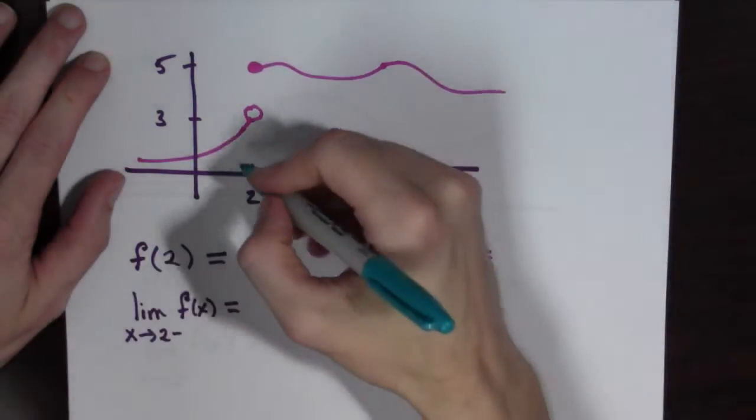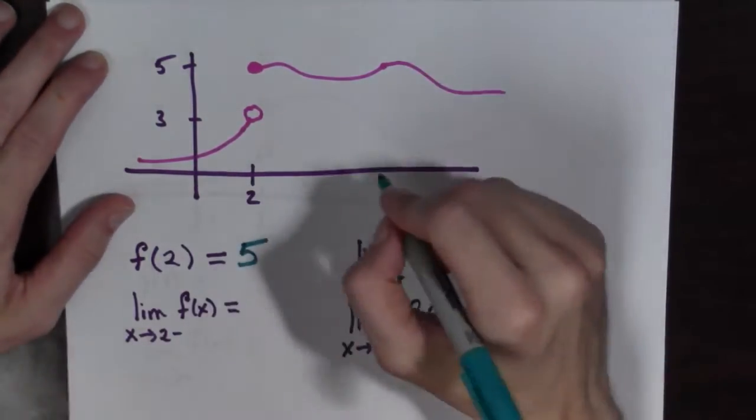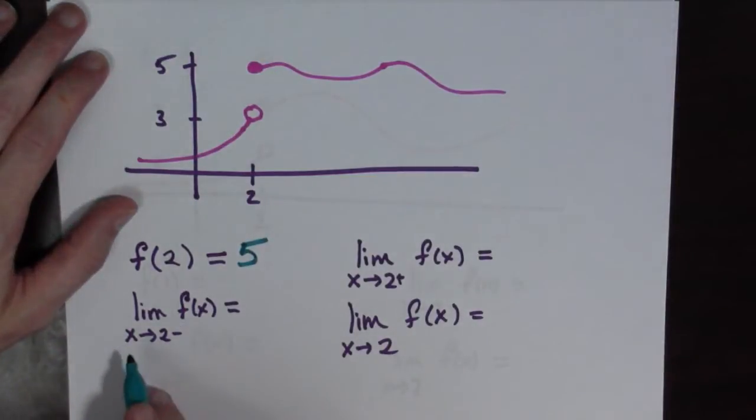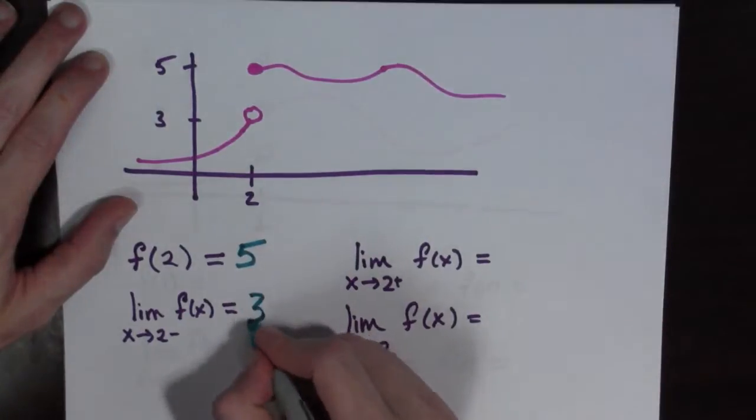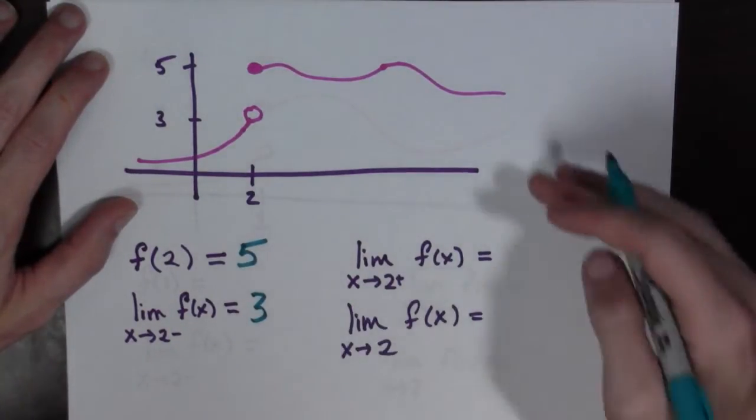So f of 2, well f of 2 is 5. And what's the limit of f of x as x goes to 2 from the left? Well, that looks like it's 3. And what's the limit as x goes to 2 from the right?